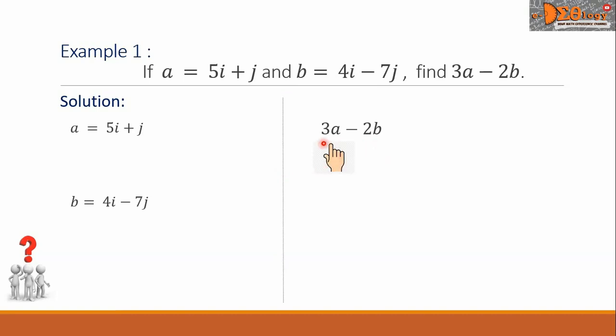Let us start with 3a. It means we are going to multiply the constant 3 to vector A. So, 3a equals 3 times the quantity 5i plus j. Simplifying this, we multiply 3 to each term of the vector. So, we have 15i plus 3j.